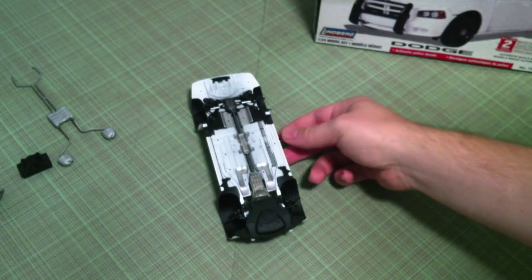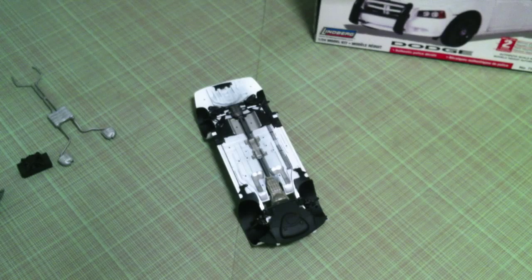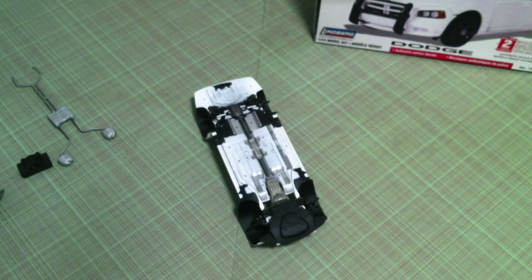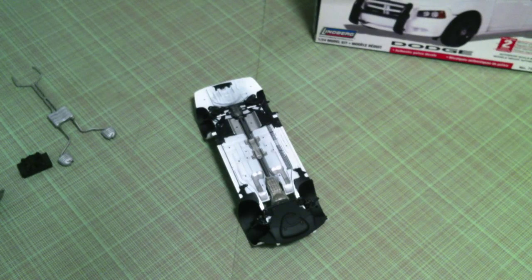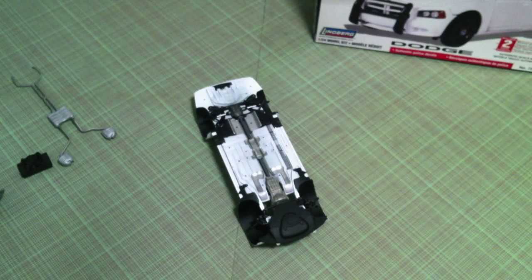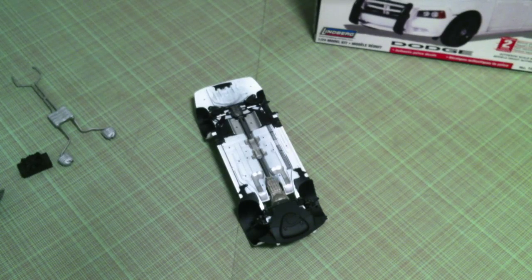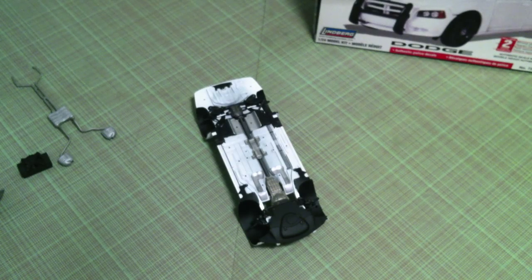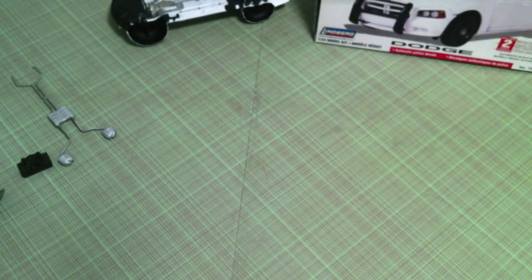That's why it's so important to test fit everything that you do before you actually glue it together and paint it or anything like that. Test fit these parts and as you're going see how they fit. Because if you get something glued in backwards, especially if it's not going to be really easy to take out, then you can run into some problems and some frustrations that you can just save yourself if you just take the time to test fit a little bit.